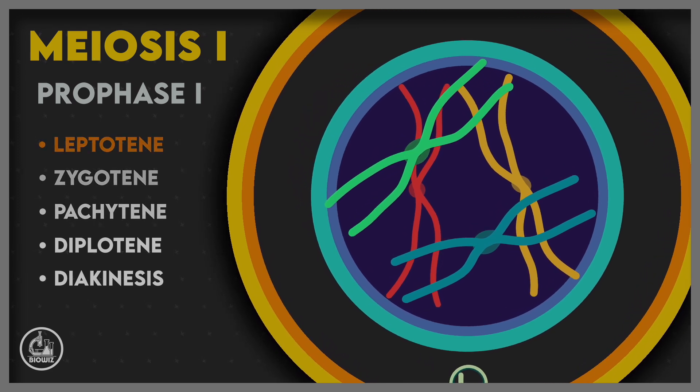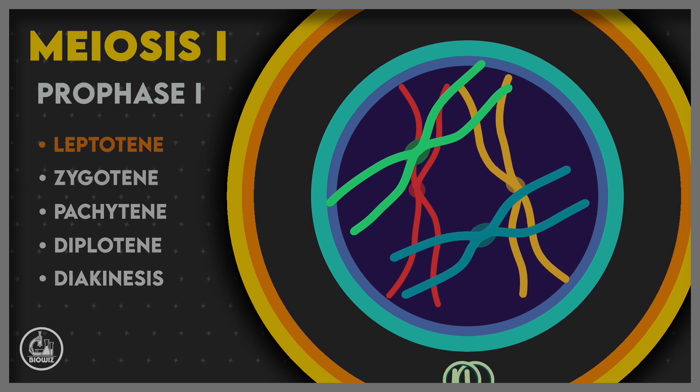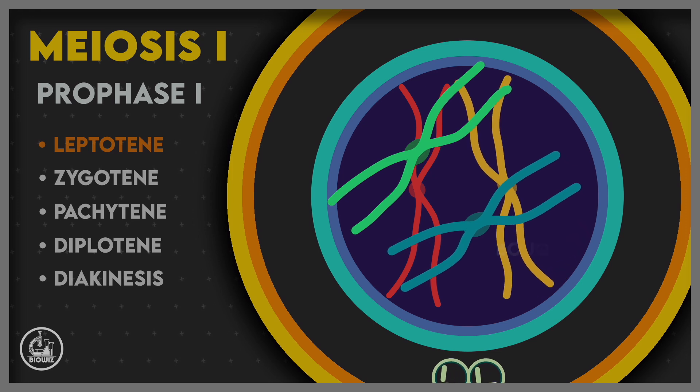Leptotene is the first sub-stage of meiosis I and is marked by the beginning of condensation of chromatin to form compact rod-shaped structures called chromosomes.